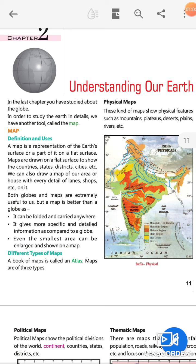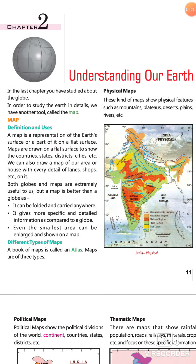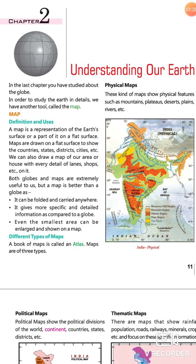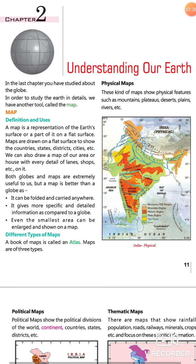इस chapter में हम अपने earth के बारे में पढ़ेंगे और map के बारे में पढ़ेंगे। Map क्या होता है? Map एक representation है जो earth की surface के बारे में बताता है। यह map countries को show करते हैं कि कौन सी country का area कहाँ पर है, कौन से state country में कहाँ-कहाँ पर हैं, district कहाँ पर है, और कौन से cities कहाँ पर हैं। We can also draw a map of our area and house with every detail of lands, shops, etc.